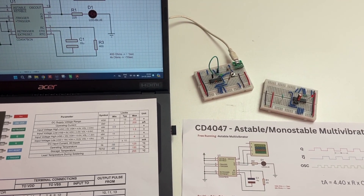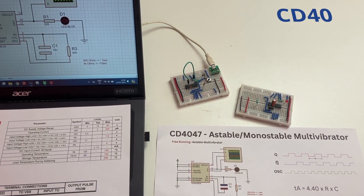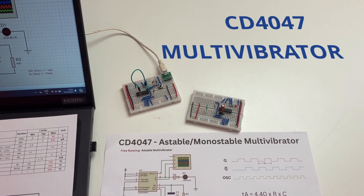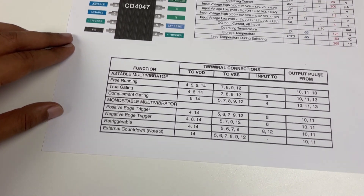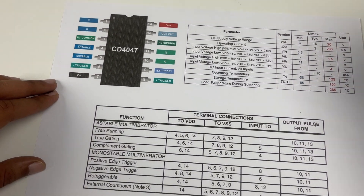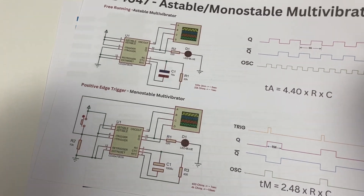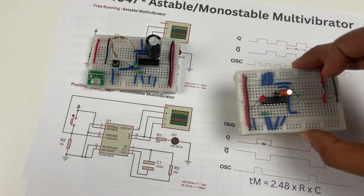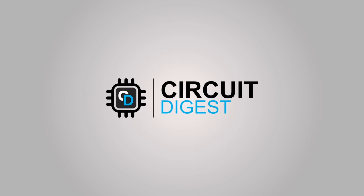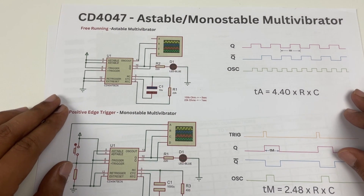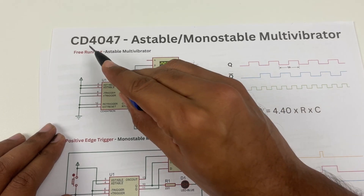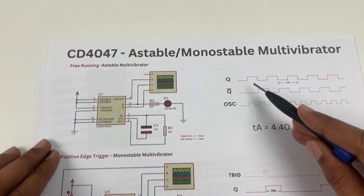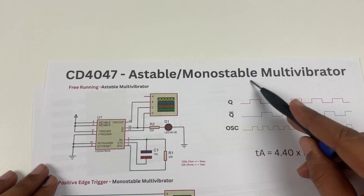In this video let's learn about the CD4047 multivibrator IC. We'll discuss the basics of this IC and show you the circuit diagram with simulation and also check how everything works practically. It is called CD4047 astable and monostable multivibrator.